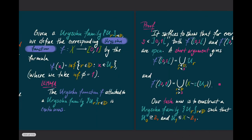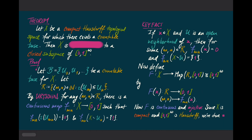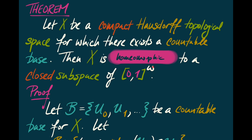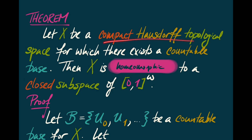What use can this lemma be put to? Here's an exciting example. Suppose X is a compact Hausdorff space for which there exists a countable base — a base for X consisting of only countably many open sets. Then X is homeomorphic to a closed subspace of [0,1]^ω, the product of countably many copies of the closed interval from 0 to 1, sometimes called the Hilbert cube. If X is any compact Hausdorff topological space with a countable base, then X is a closed subspace of this Hilbert cube.